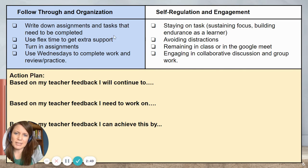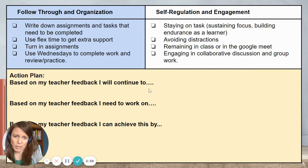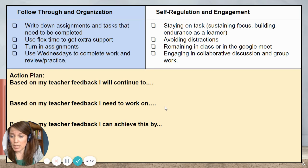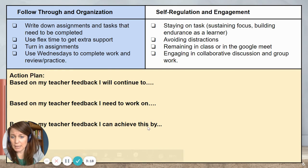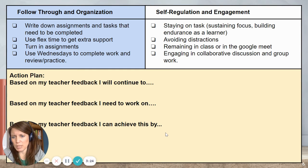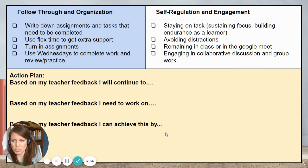In looking at these descriptors of an engaged, organized, and independent learner, think about your action plan. Based on your teacher feedback, note what you will continue to do — things that are working really well and where you're having success. Then, based on your teacher feedback, identify what you need to work on — areas of growth where you could get some support or be more intentional about building into your habits and routines. Finally, based on your teacher feedback, consider how you can achieve this — what you're going to do and what supports you'll need to follow through on your action plan. Your advisor will help you answer this as needed when you look at all your teacher feedback.